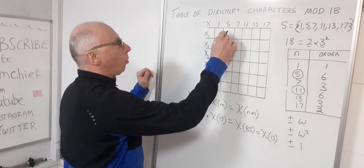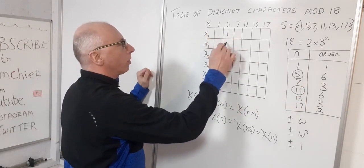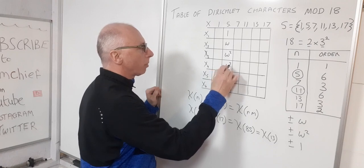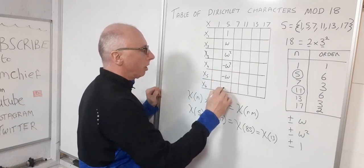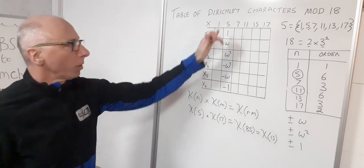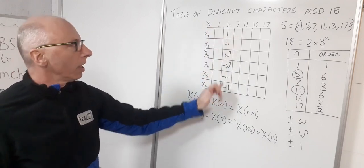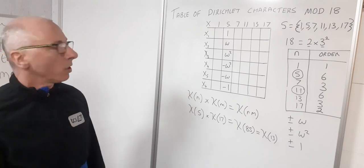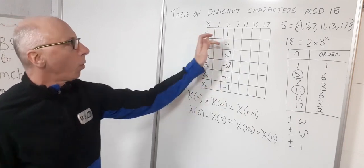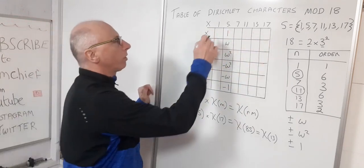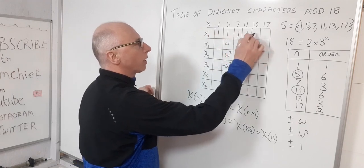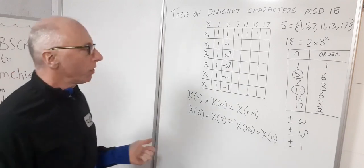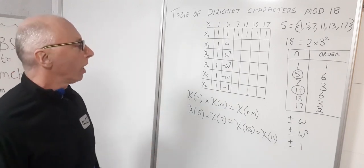For element 5 we have the 6 values: 1, ω, ω², −ω², −ω, −1. For element 1, all values along that row are always 1 — that's a standard property of Dirichlet characters.